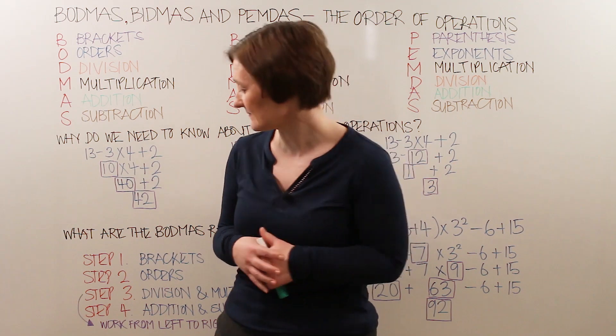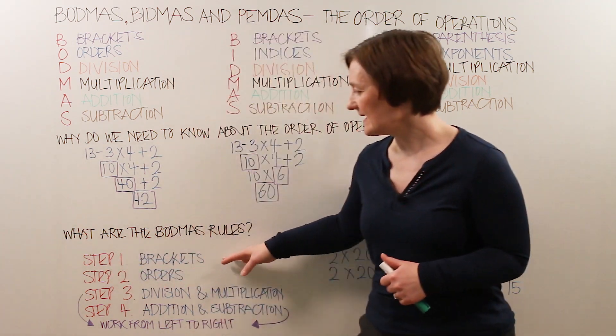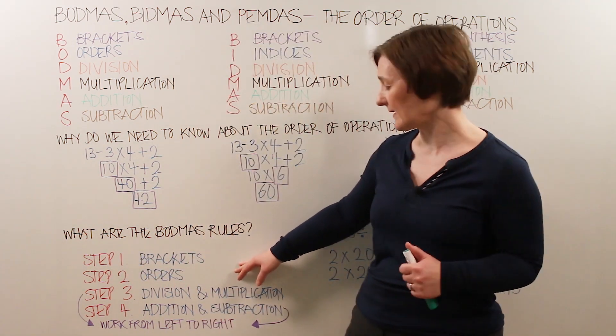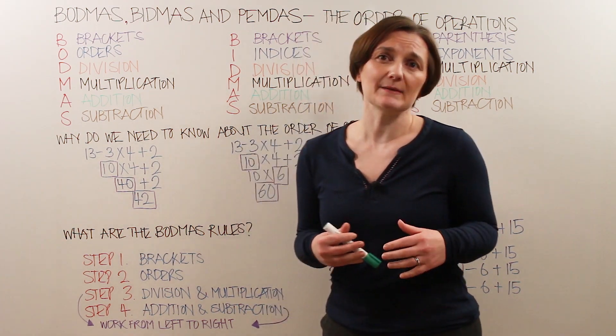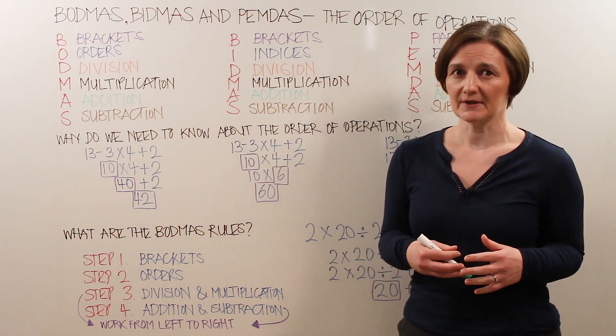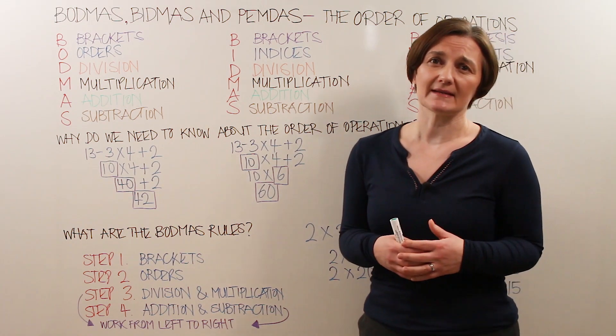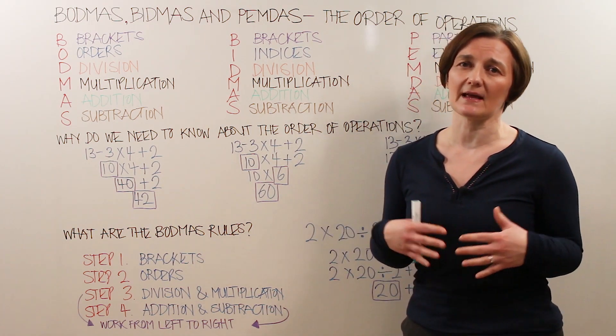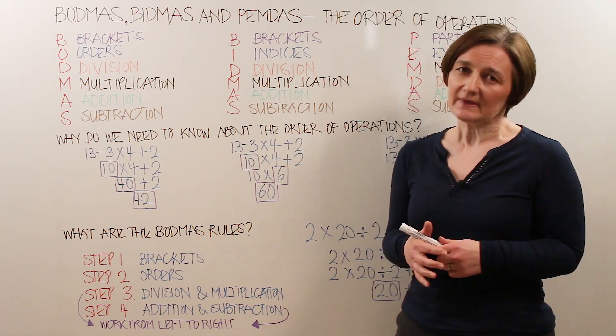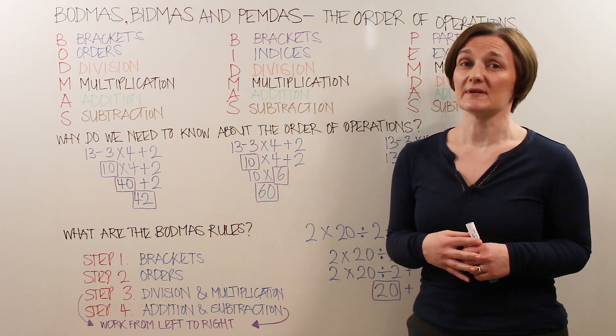So what are the BODMAS rules? Well as you can see here, step 1, B is for brackets. If part of the calculation is in brackets, work this out first. And if there's more than one set of brackets, start at the innermost set of brackets and work outwards. Solving the bracketed part of the problem will give you a single number.